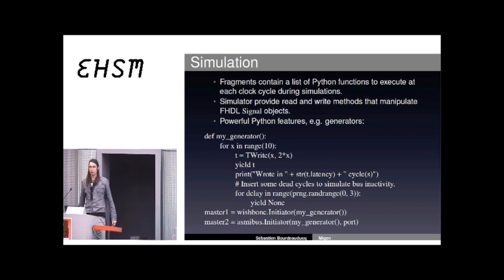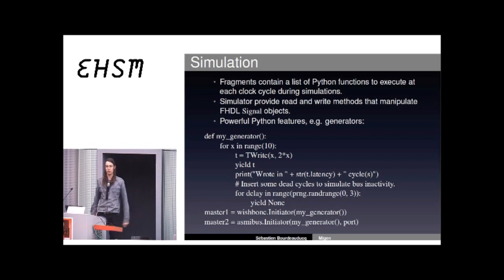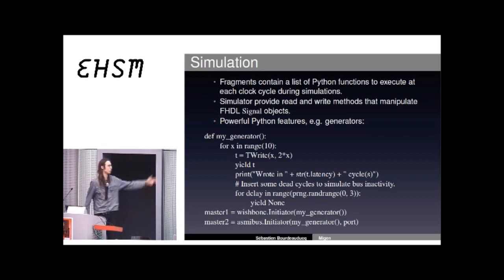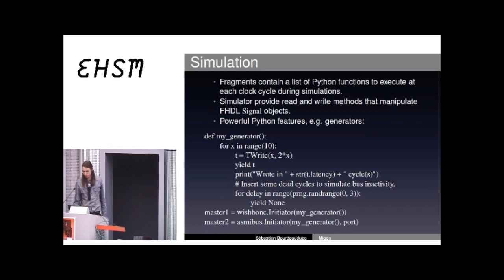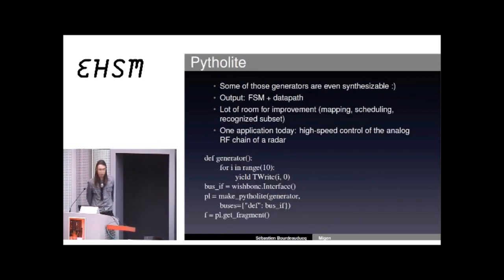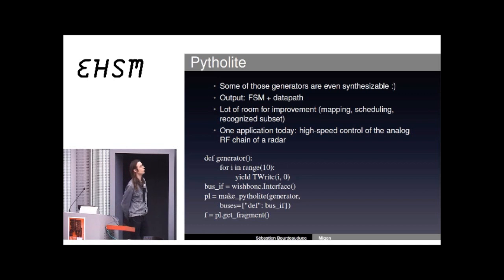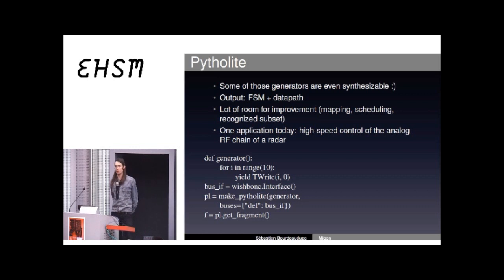Or if you want another bus — ASMI, the bus specific to Milkymist which is optimized for high-performance SDRAM — you can just use the other initiator component from another Migen library, using the same generator semantics. A new feature of Migen is that you can actually compile some of those generators into finite state machines.